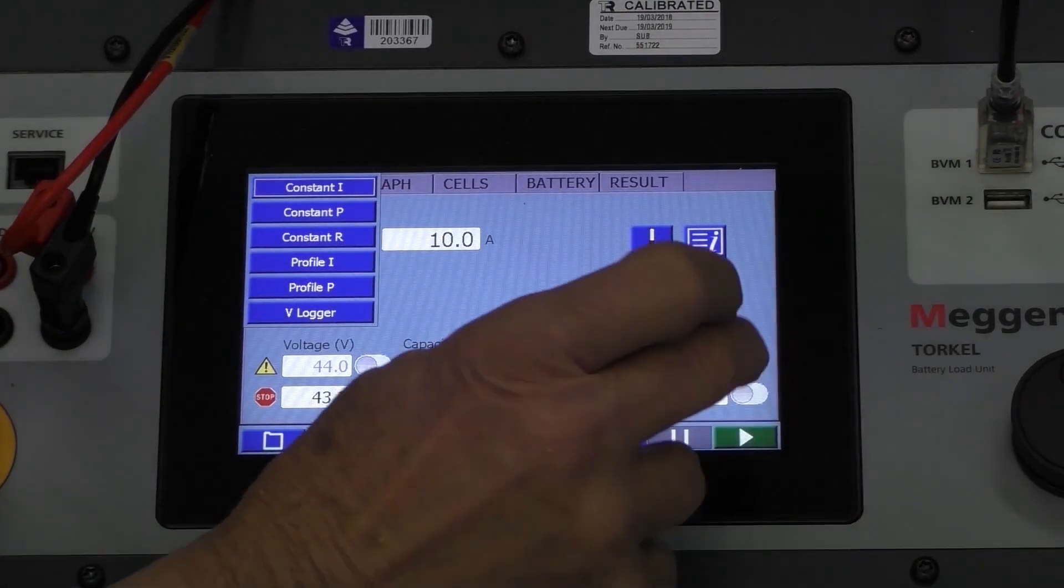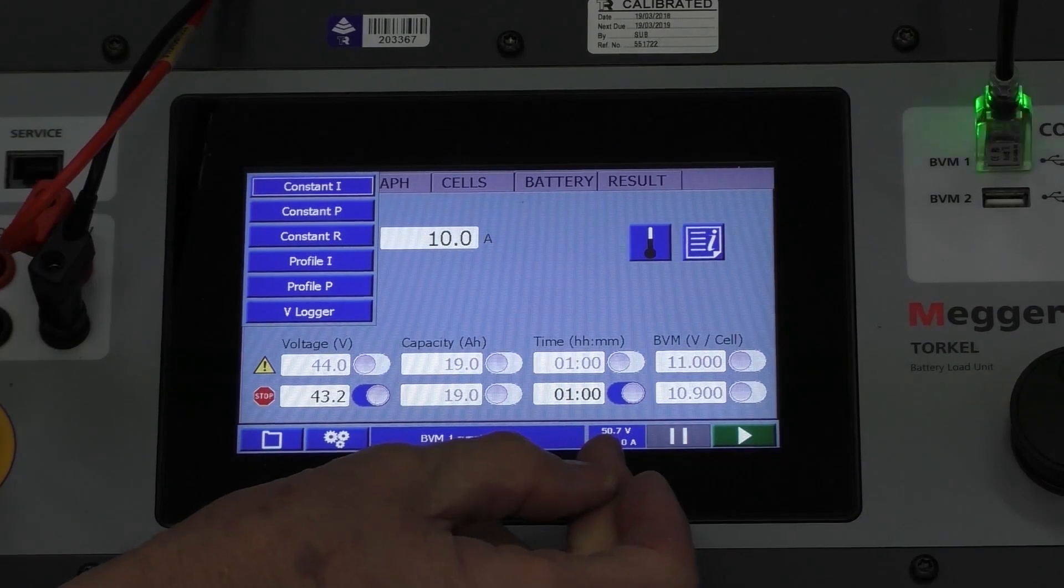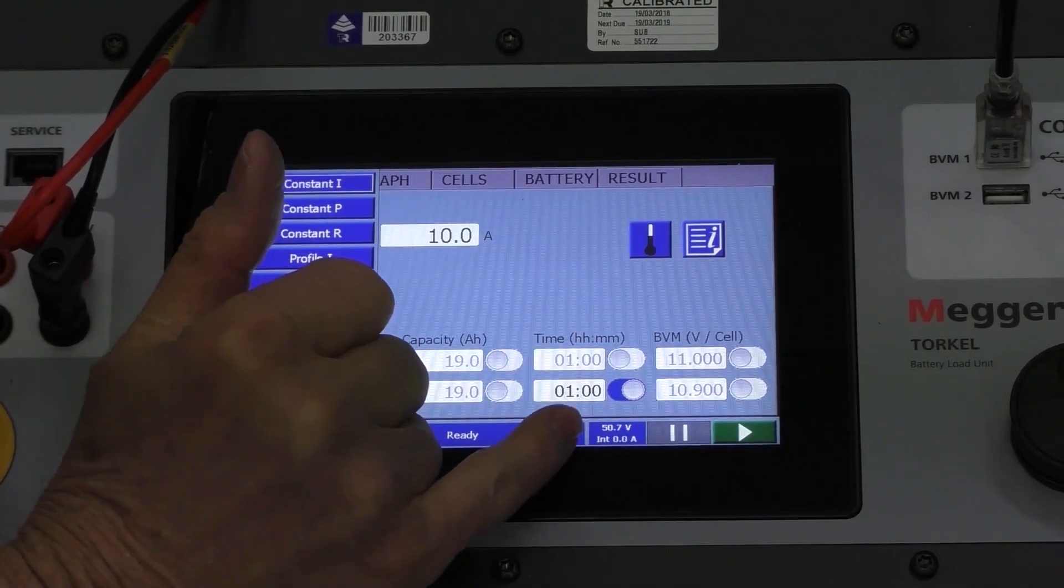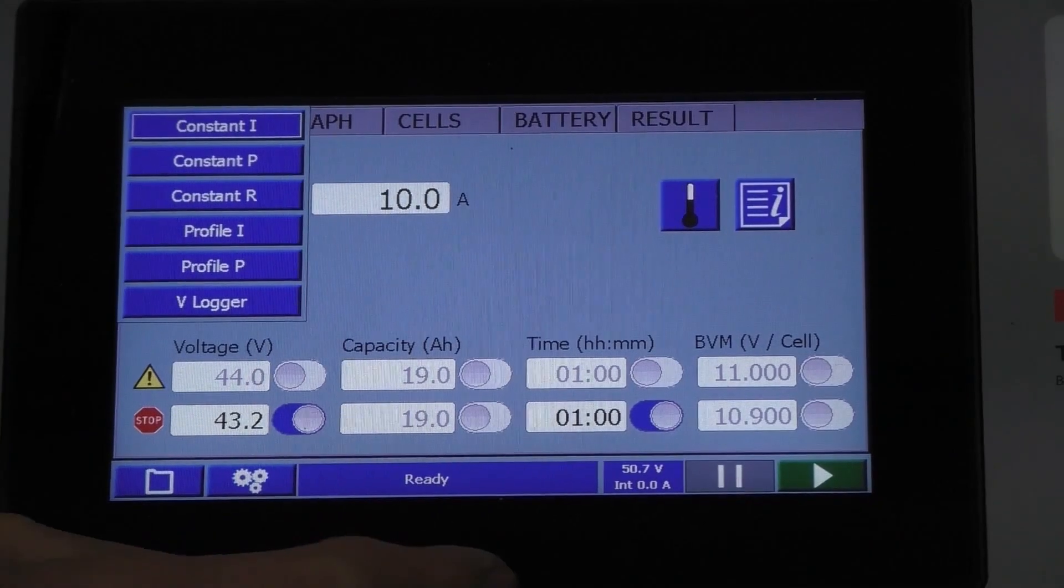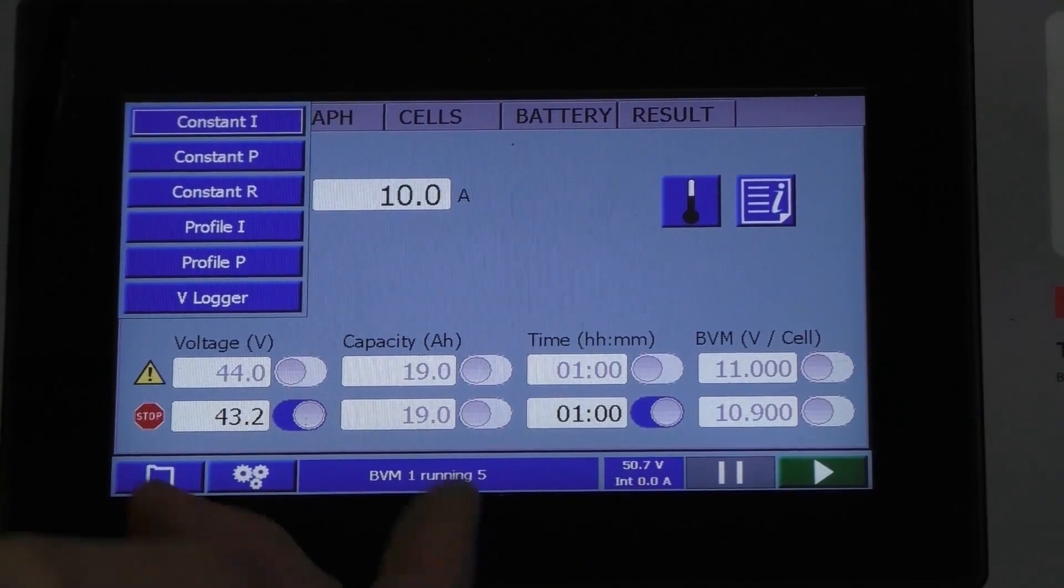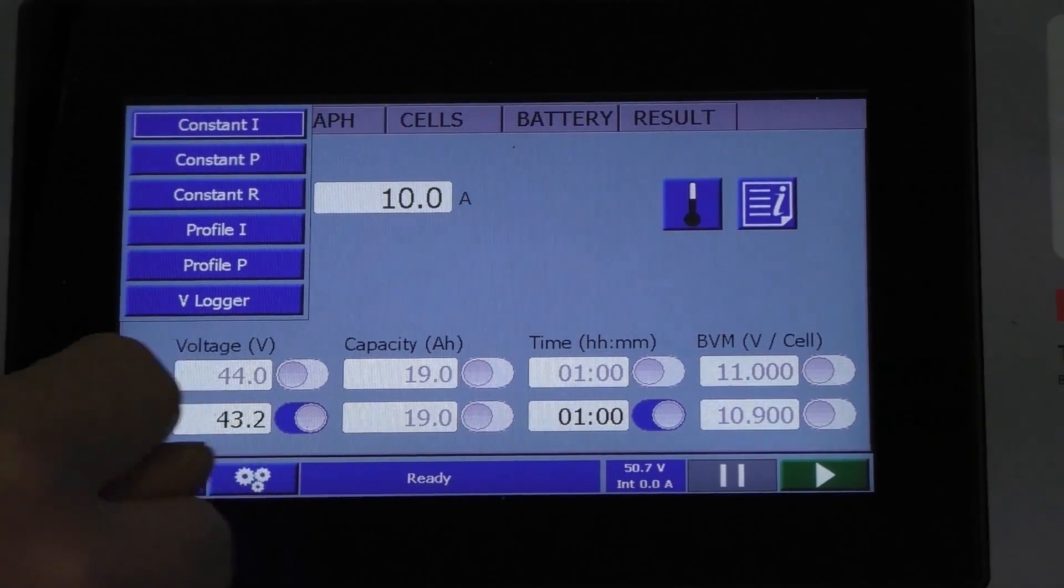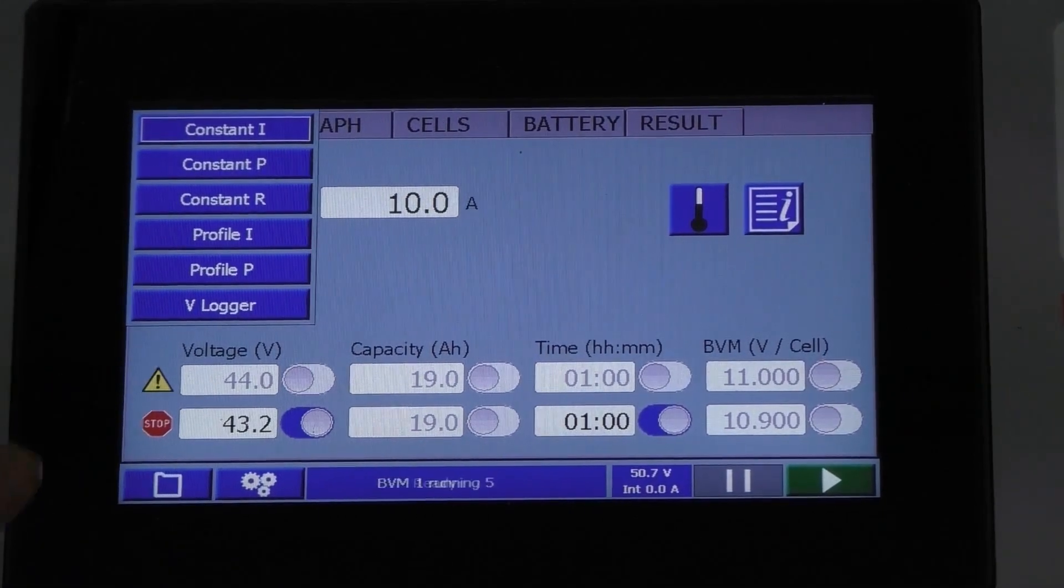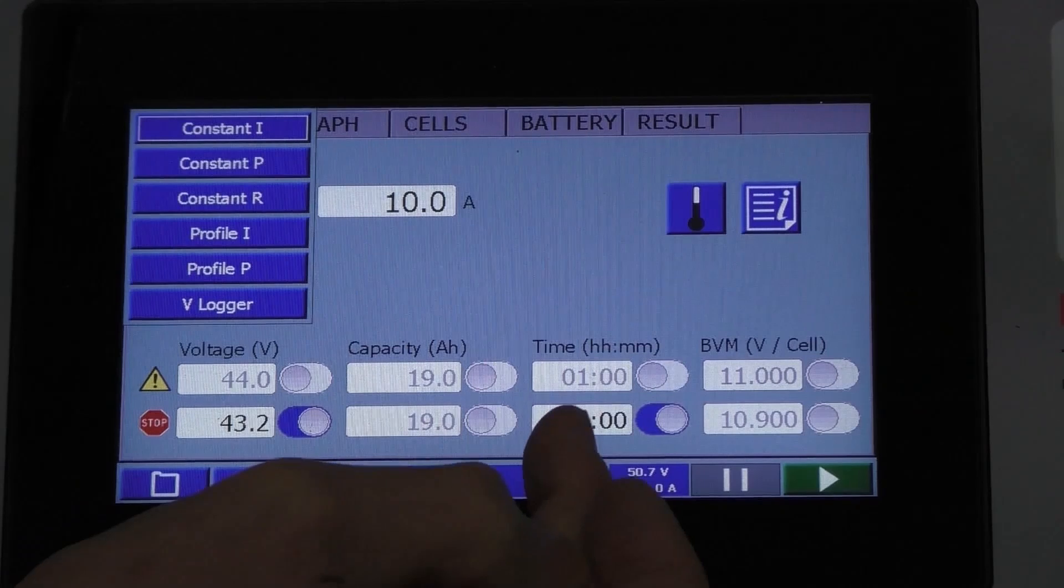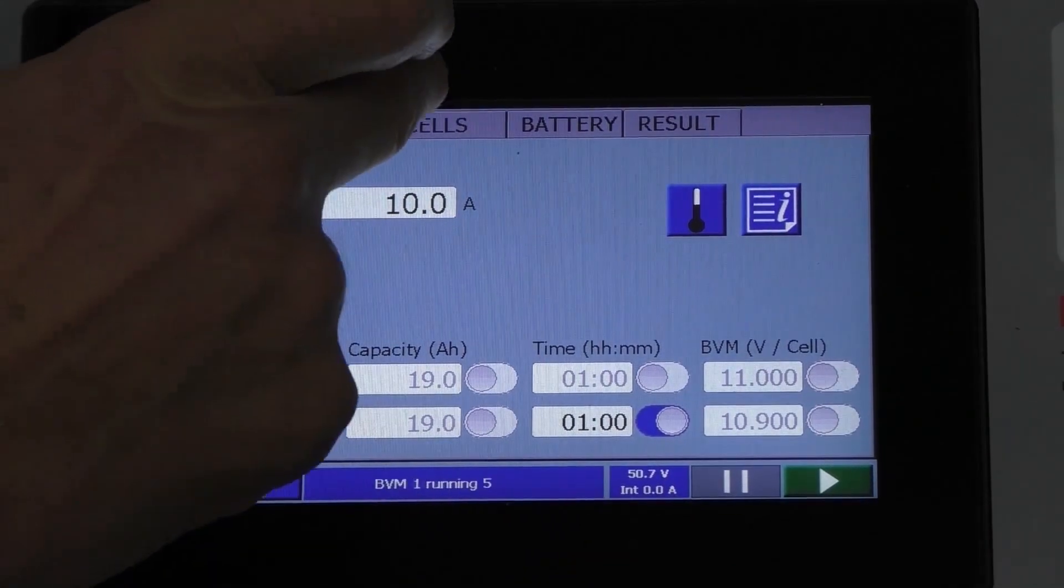Once I push go, you can see here there's no amps being drawn by this unit and it's 50.7 volts in supply. So I've set my stop voltage, if the voltage drops below that, we know the test has failed and it's going to last for one hour. Now we can come back over here.